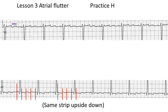We try to measure them to come up with a ratio of how many flutter waves are occurring for each QRS. We need to start and end at the same place in relation to the QRS, because we're trying to get a relationship between how many flutter waves there are for each QRS.